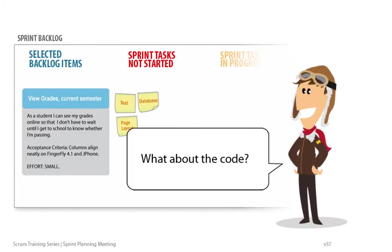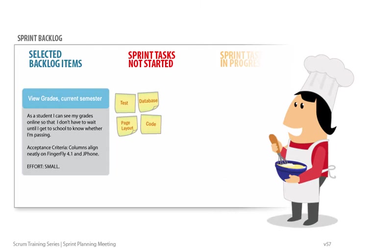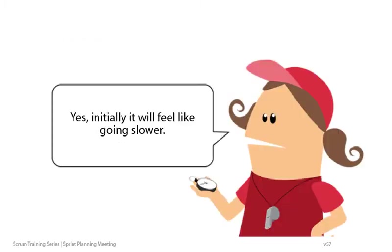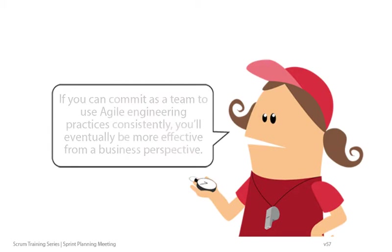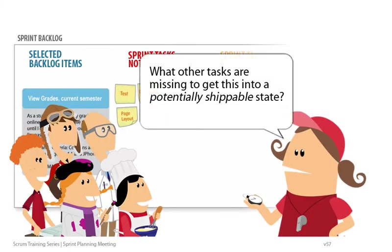What about the code? Our test-driven development skills aren't that good yet. This will take a bit longer than our old way of working. Yes, initially it will feel like going slower. If you can commit as a team to use agile engineering practices consistently, you'll eventually be more effective from a business perspective. Product development is not about how fast you type code. What other tasks are missing to get this into potentially shippable state?